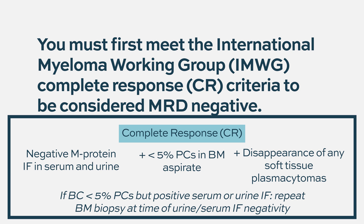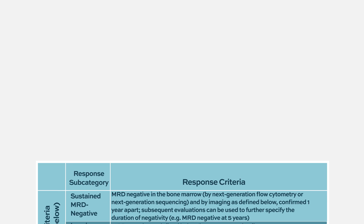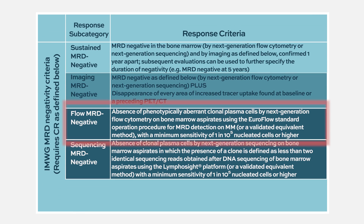Once in complete response, MRD negativity by IMWG criteria can be assessed in four different ways. The first is MRD by flow — specifically next-generation flow — where one in a hundred thousand cells are investigated and no myeloma cells are detected.